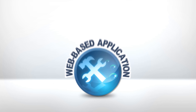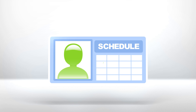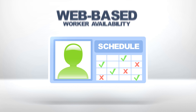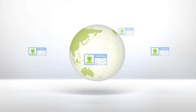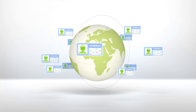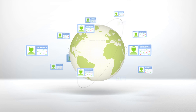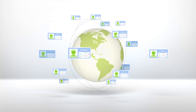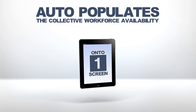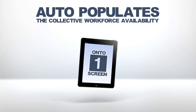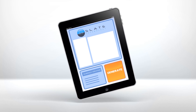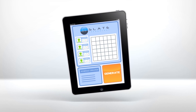More efficient scheduling begins with web-based submission of worker availability. Individualized allocation of personnel resources is facilitated with Slate's Global View app, which auto-populates the collective workforce availability onto one screen. Automated schedule creation is also available with a simple click of a button.